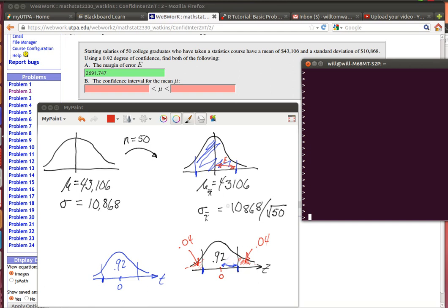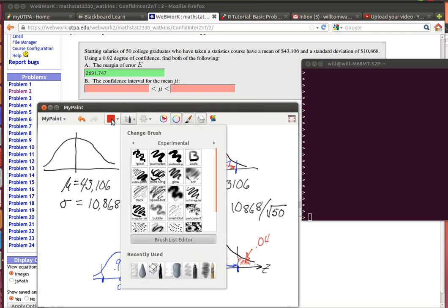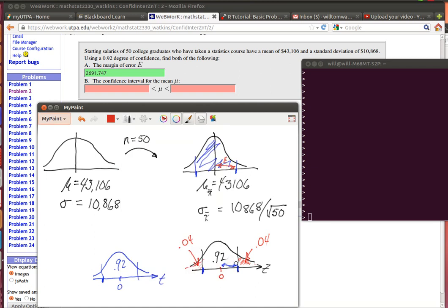What we're interested in is this 92% confidence interval, so we're worried about finding this value right here, the alpha divided by 2. That means that we need to have a 0.04 up here. Now notice that what that says is that we're going to have a 0.96 back here.